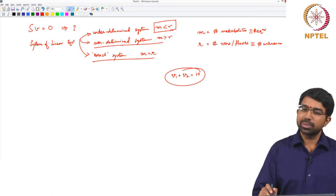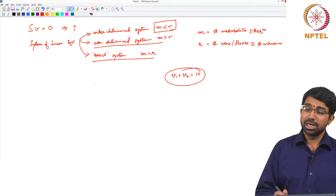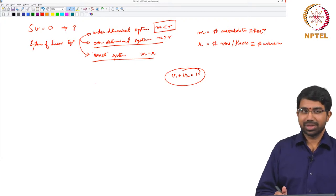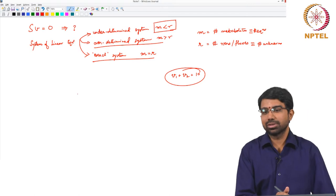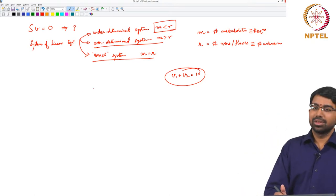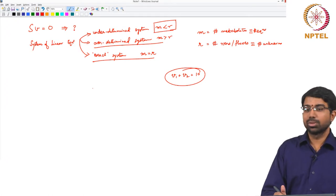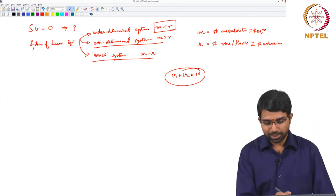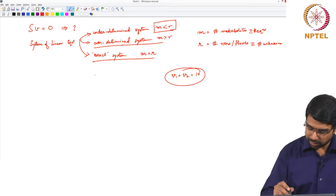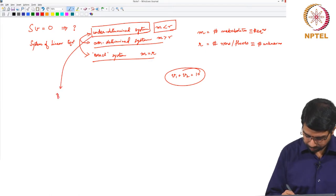And overdetermined system, it could be inconsistent or you might be able to fit a good solution, a solution that satisfies most constraints within some epsilon, something like a least square solution. Let us focus mostly on underdetermined systems, which is what we always observe in biological systems or metabolic networks.